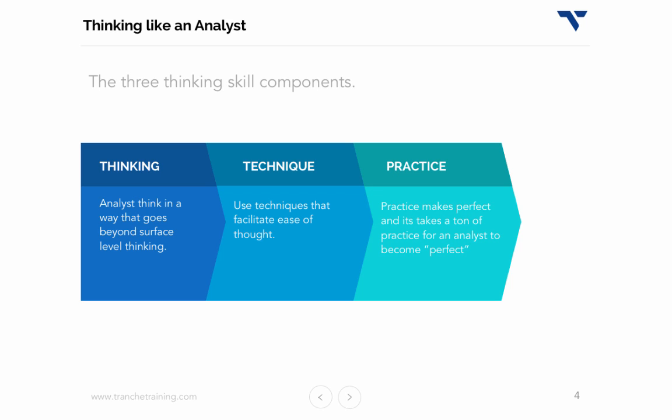An analyst thinks a bit differently than most. They go beyond surface level thinking and look for root cause, which allows them to skip past the unimportant fluff and get to the meat. The way they do this is by deploying various techniques, including the five whys, which we'll learn about in this lesson. These techniques facilitate ease of thought — they help spur questions and other thought patterns. Analysts then practice until thinking deeply becomes natural.